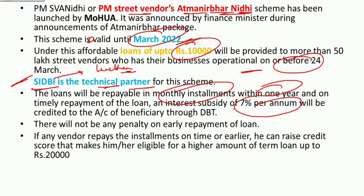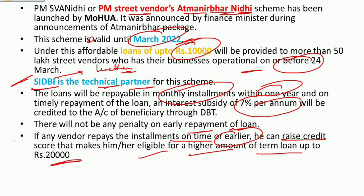On timely repayment, an interest subsidy of 7% per annum will be credited to the account of the beneficiary. There will be no penalty on early repayment of the loan. If any vendor repays installments on time or earlier, they can raise their credit score, making them eligible for a higher amount of term loan up to Rs. 20,000.